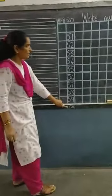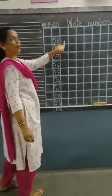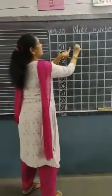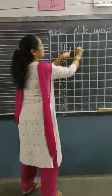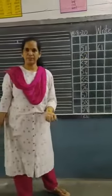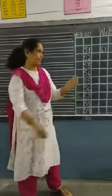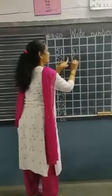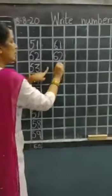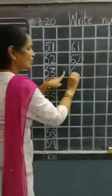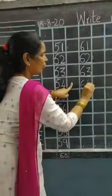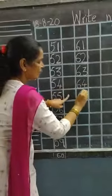After 60, leave one box and write. After 60 — 61. After 61, what number? Yes, 62. Now write 61, 62, 63, 64.